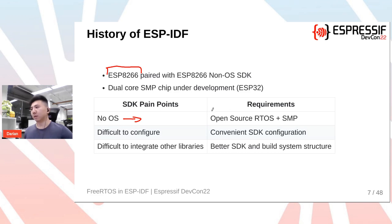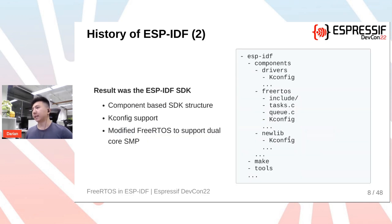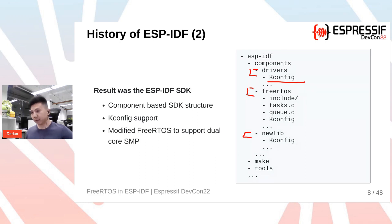This generated requirements for a new SDK to support the ESP-32. First, there had to be an RTOS — preferably one supporting SMP, given the ESP-32 was going to be a dual-core SMP chip. Second, the SDK needed a convenient configuration method. Third, it needed a better build system structure allowing easy integration of third-party libraries. The result was ESP-IDF: a component-based SDK using kconfig for configuration, with FreeRTOS as the operating system — modified from its single-core original to support dual-core SMP.